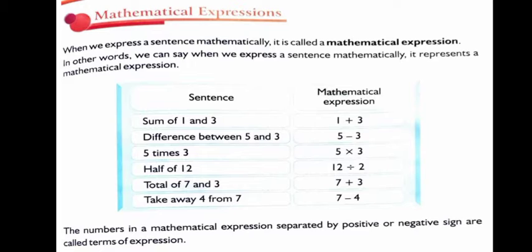Total of 7 and 3. So total means sum. So sum means addition symbol. So 7 plus 3.